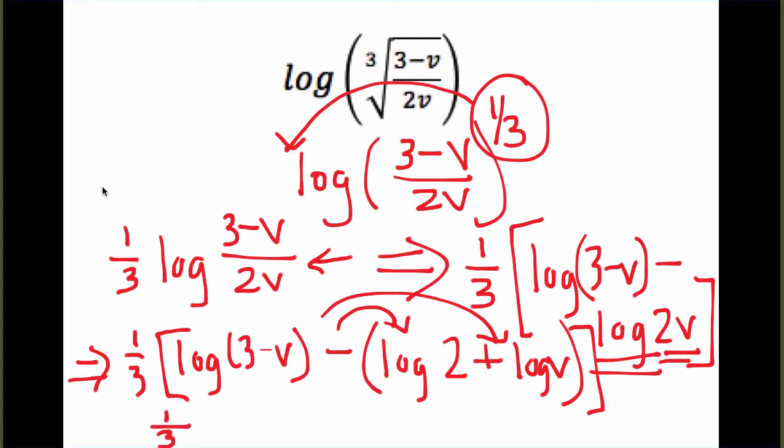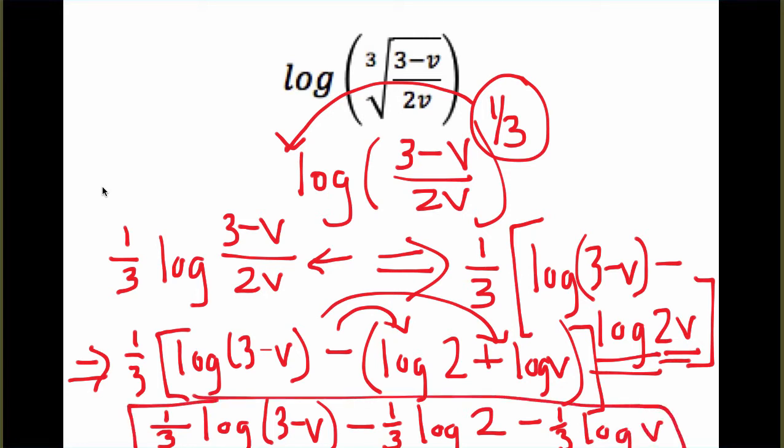So I'll just write it in here at the bottom. 1/3rd times the log of (3 minus v) minus 1/3rd times the log of 2 minus 1/3rd times the log of v. And that gets rid of all parentheses.